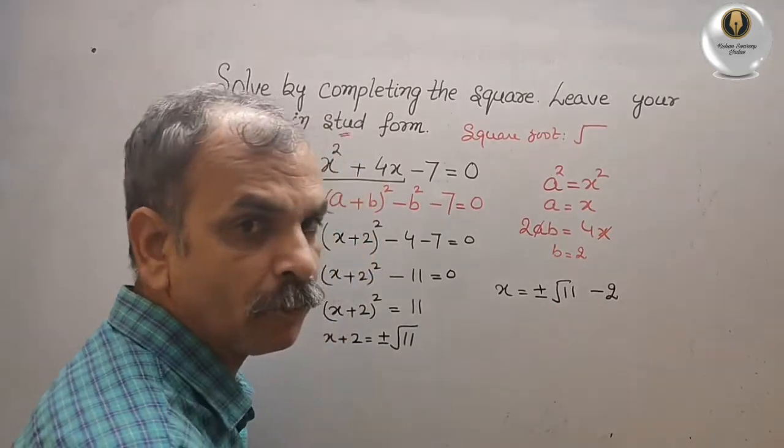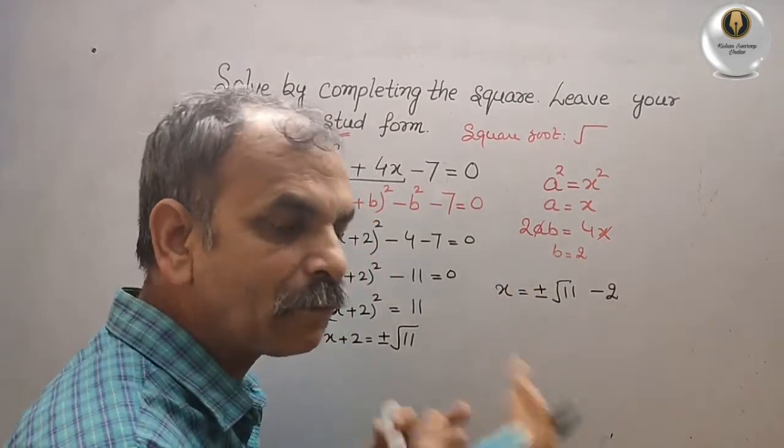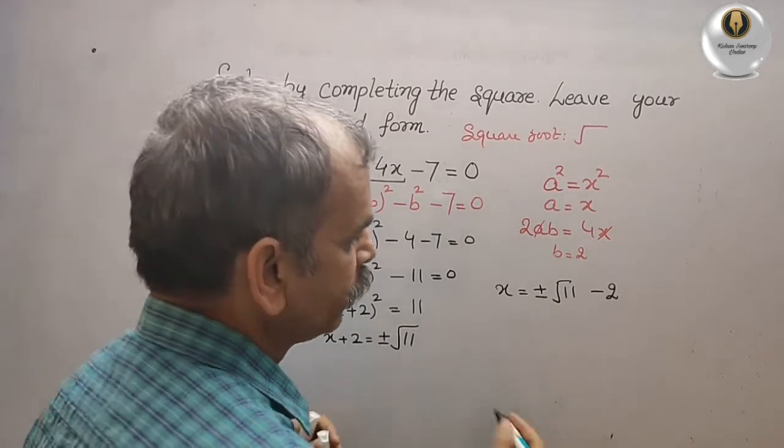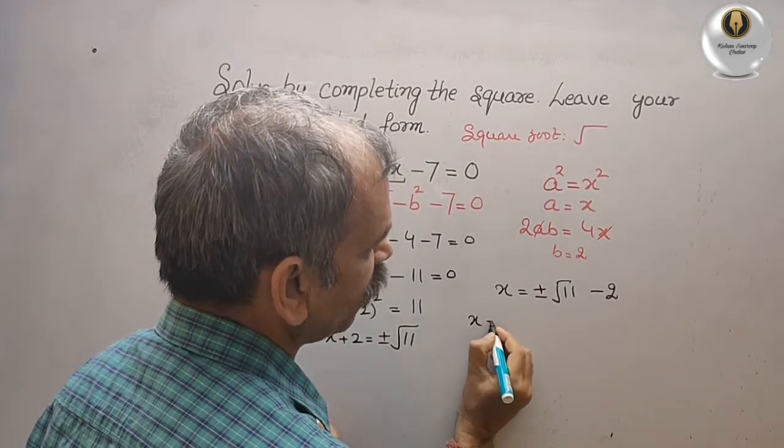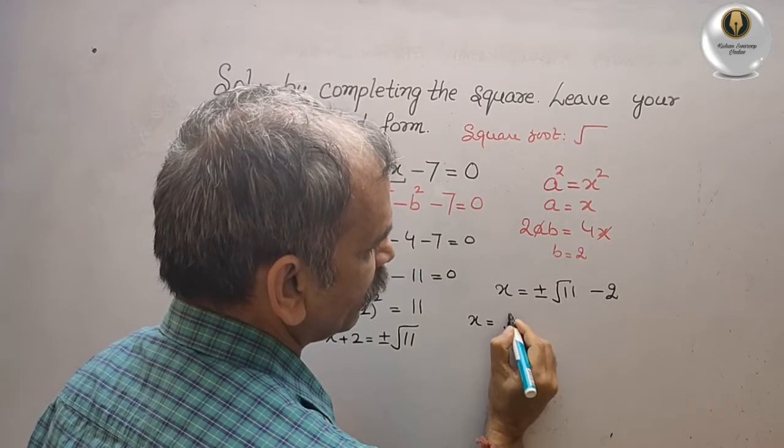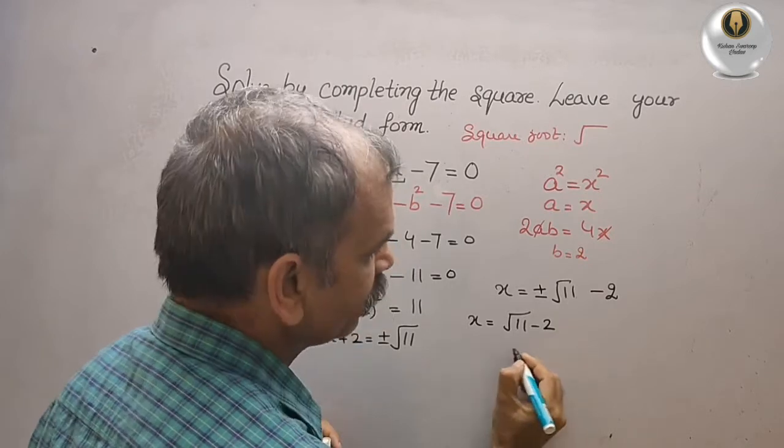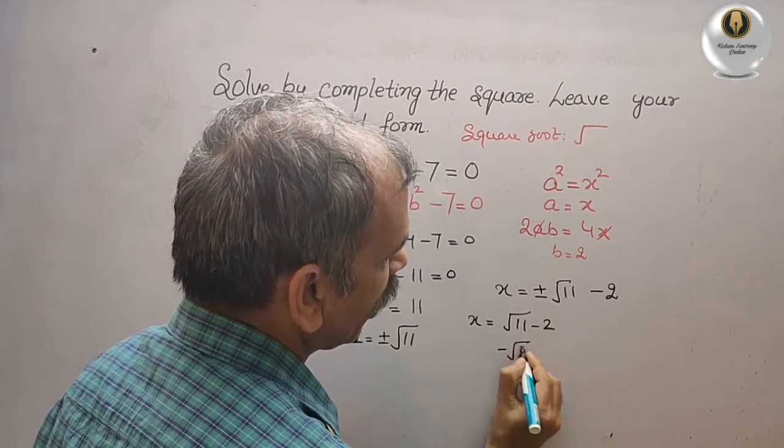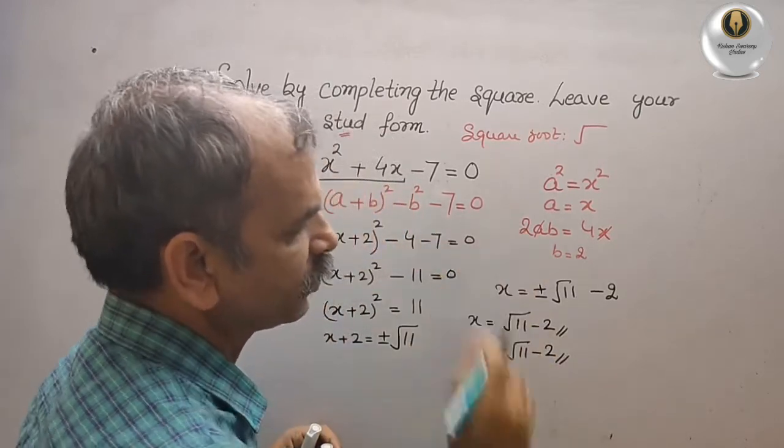So this is your solution. Now you can see one time it is plus, another time it is minus. We will take both, so x = √11 - 2 and x = -√11 - 2. So these are the two solutions for this equation.